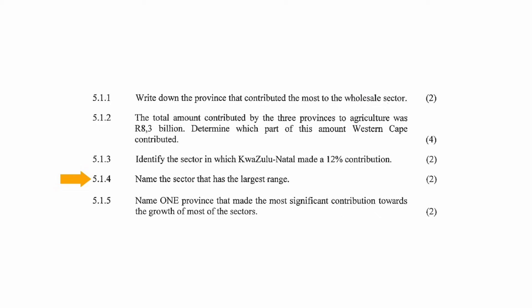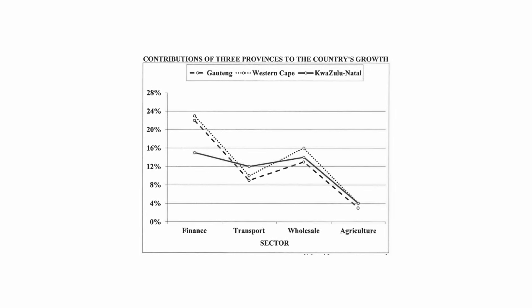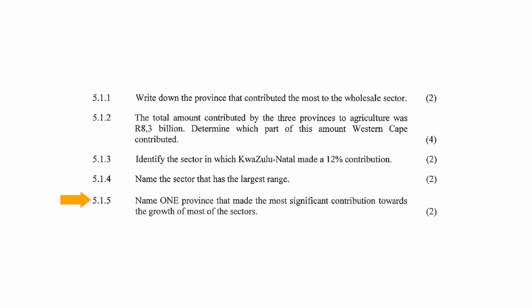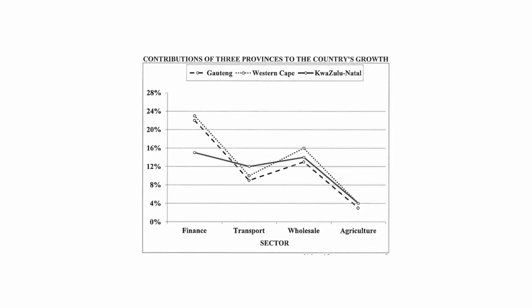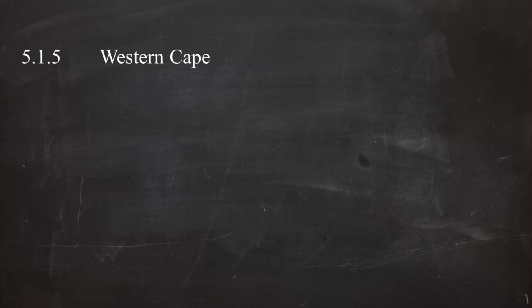In question 5.1.4, you have to name the sector with the largest range. The range is the difference between the highest and lowest values. Comparing the four sectors, finance has the largest range — the difference between the Western Cape at about 23% and KwaZulu-Natal at about 15%. In question 5.1.5, from the graph the Western Cape on average has the highest percentage contribution for each sector, so the Western Cape is the province that contributed the most growth to these sectors.